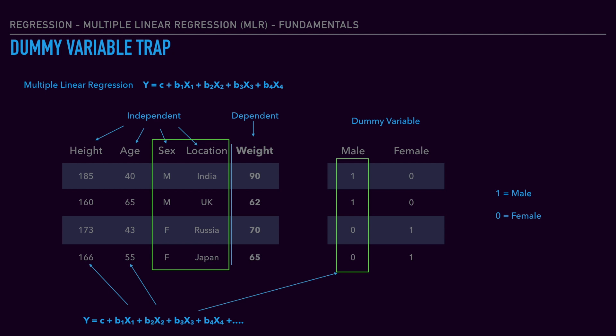Now let's look at more than two categories of data. Suppose you have a dataset with 10 categories. You can apply the same scenario — convert 10 individual columns with dummy variables — but then use only 9 columns as input, dropping one to avoid the dummy variable trap.